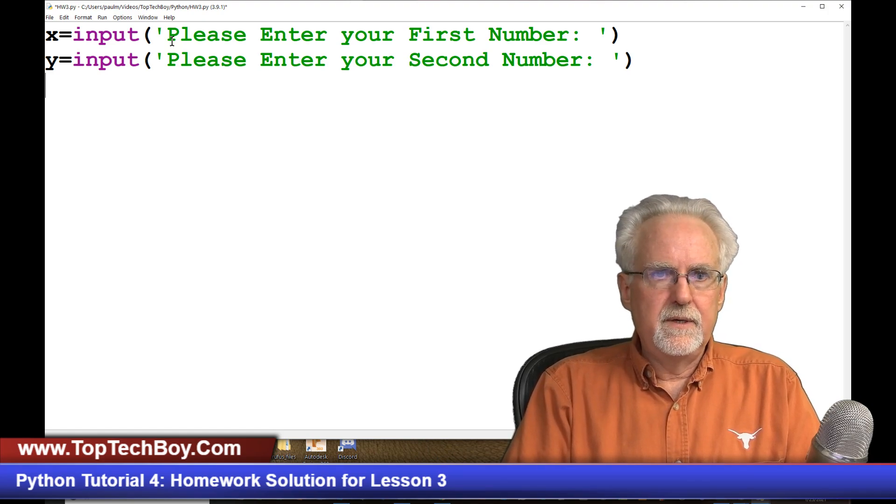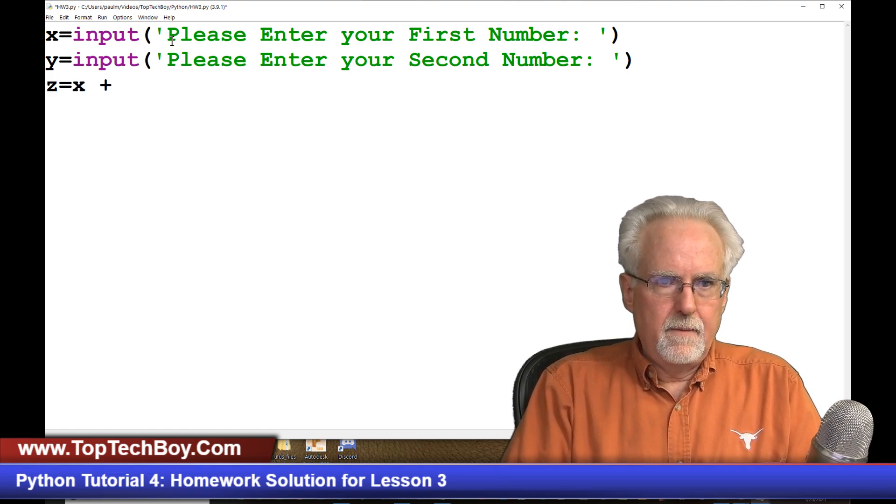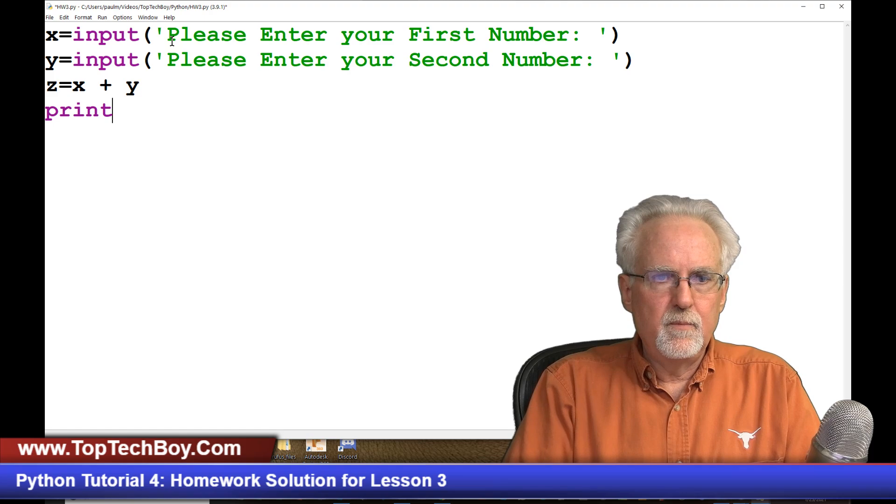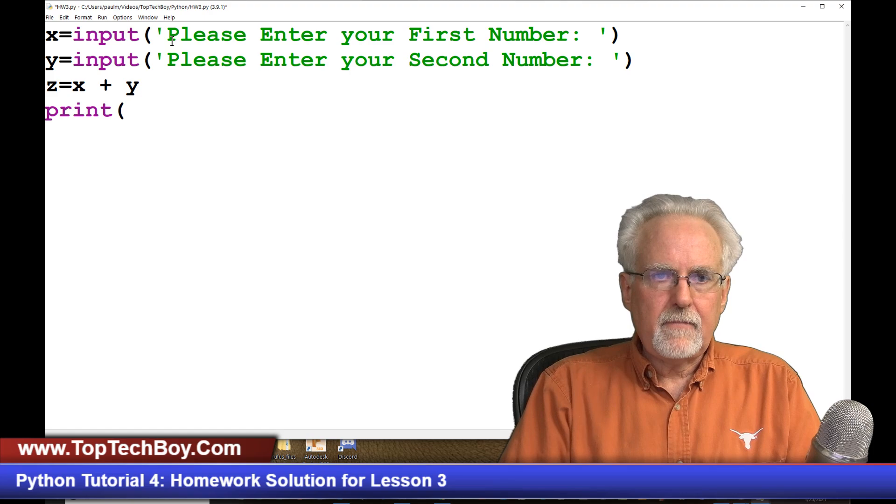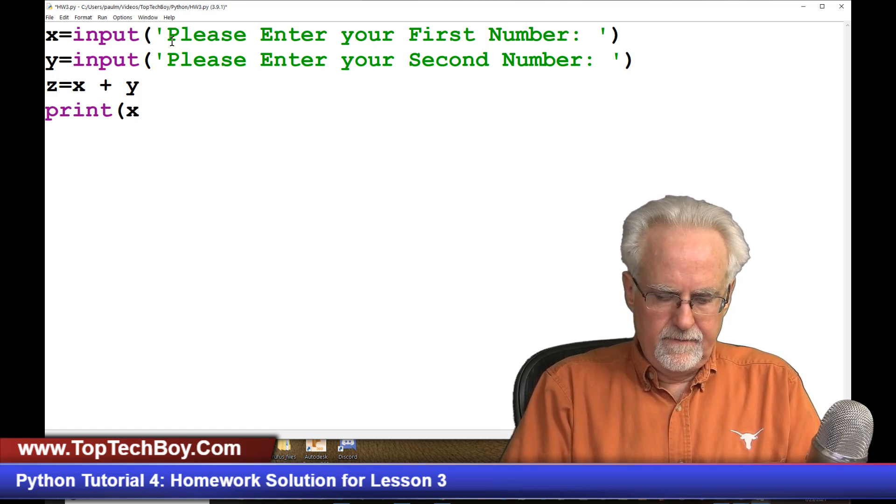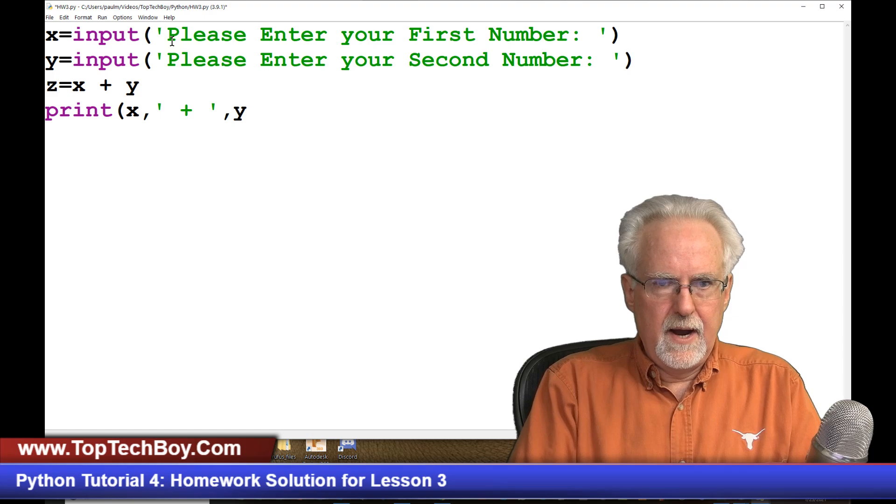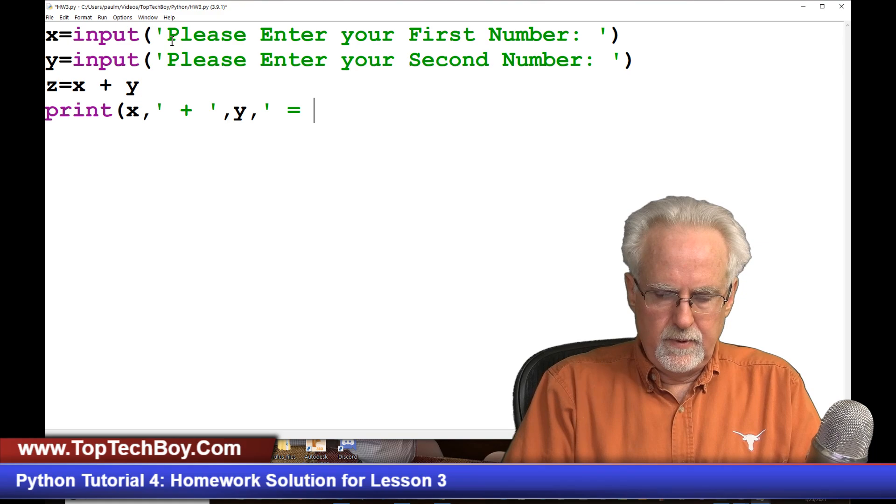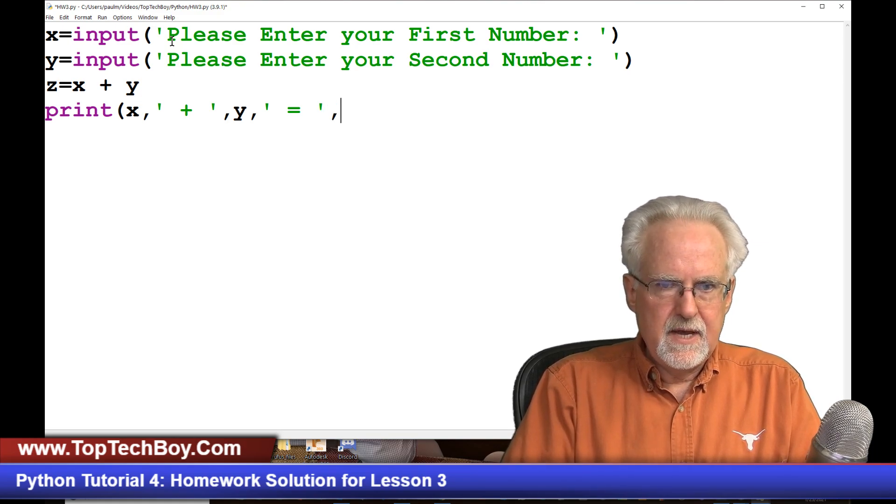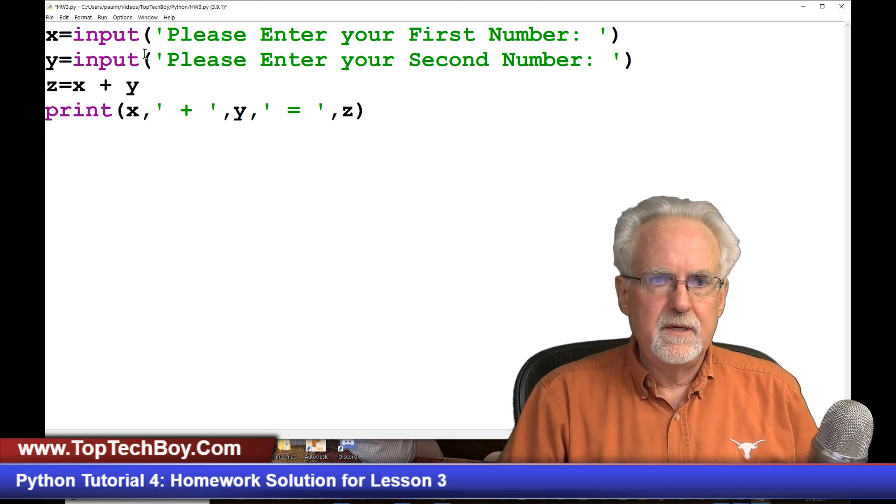And then what we are going to do is we are going to say Z is equal to X plus Y. And then we're going to say print. And we are going to say, let me do it this way, X, the variable, and then the string space plus space, and then comma Y and then the string space equal space. We've done this before. You should know this. And then print Z. That is pretty good. We should be good to go here.